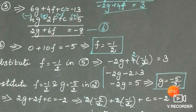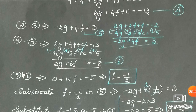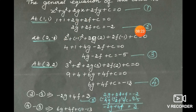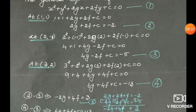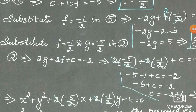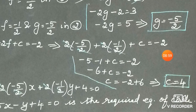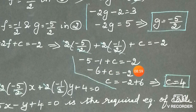Now with f = -1/2 and g = -5/2, we find c using equation 2: 2g + 2f + c = -2. Substituting: 2(-5/2) + 2(-1/2) + c = -2. The 2s cancel giving -5 + (-1) + c = -2, so -6 + c = -2. Bringing -6 to the right side: c = -2 + 6 = 4.